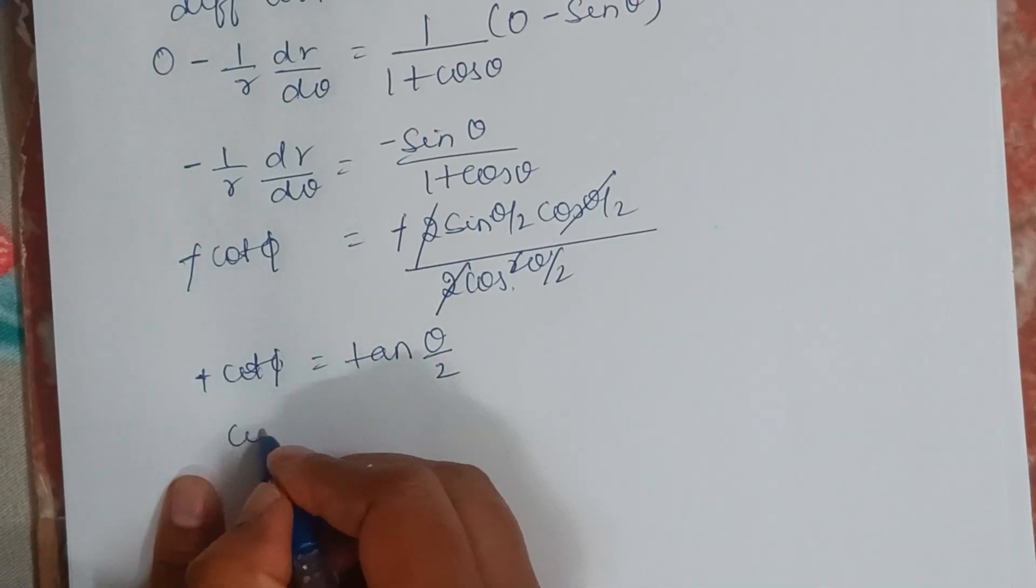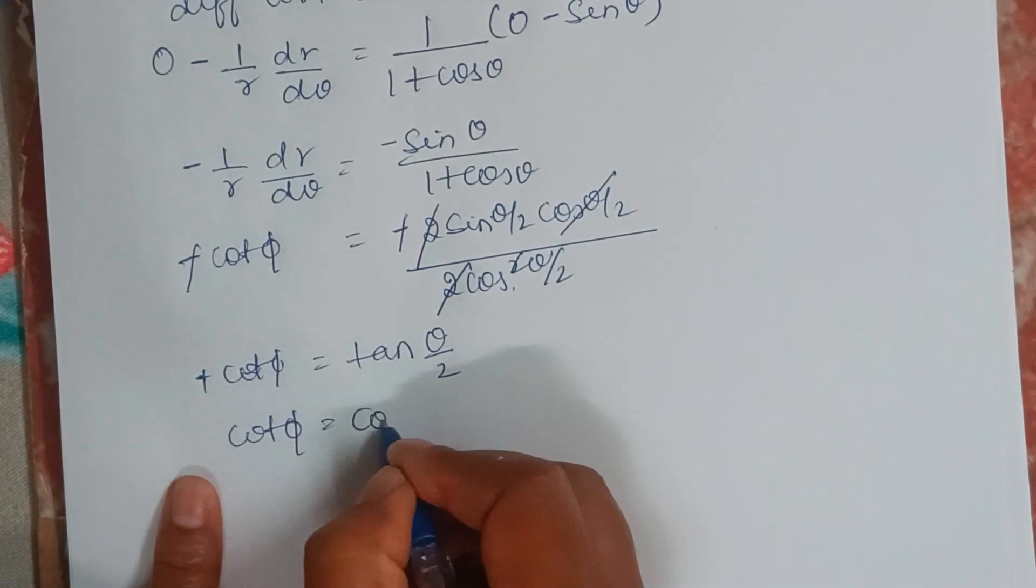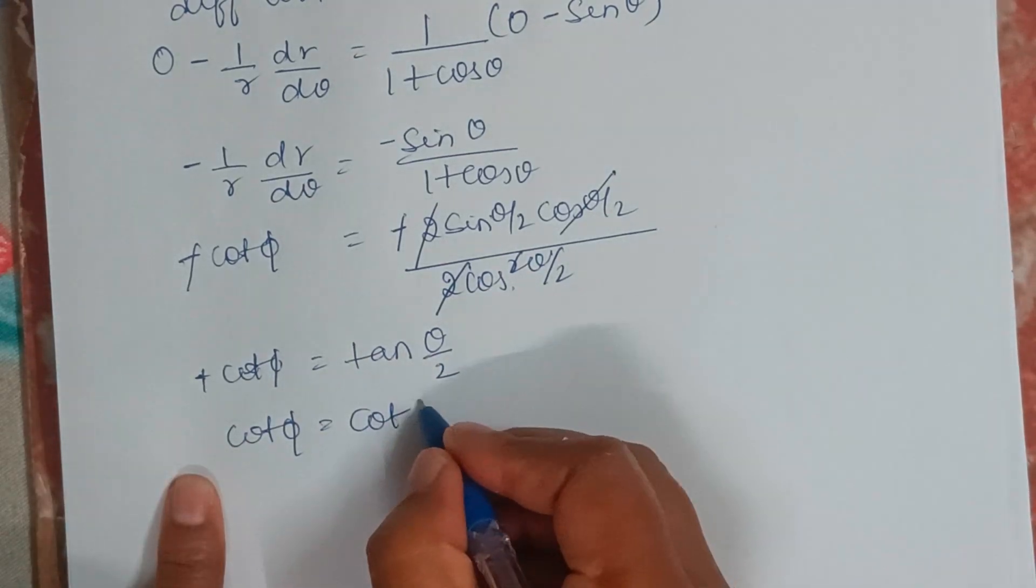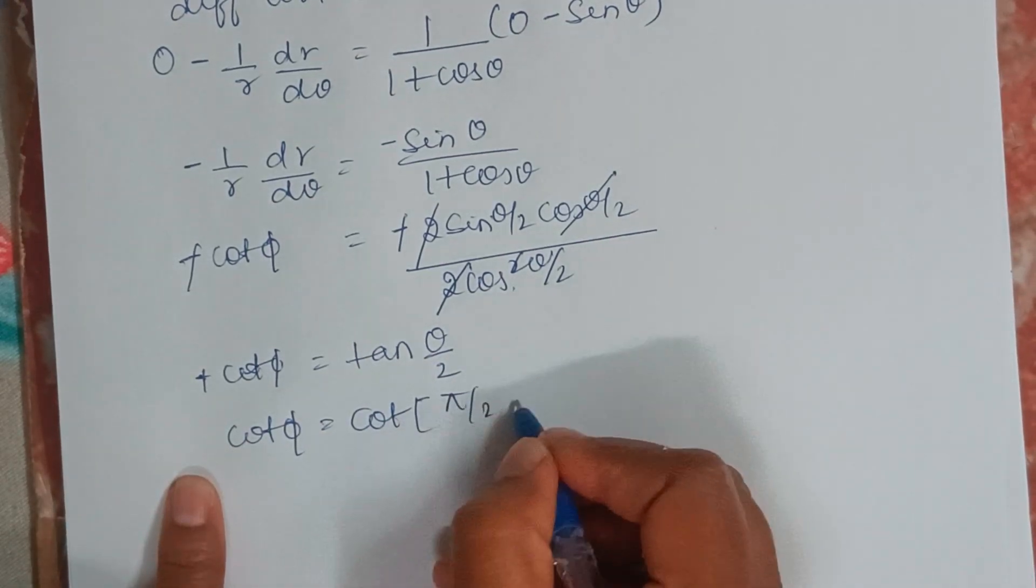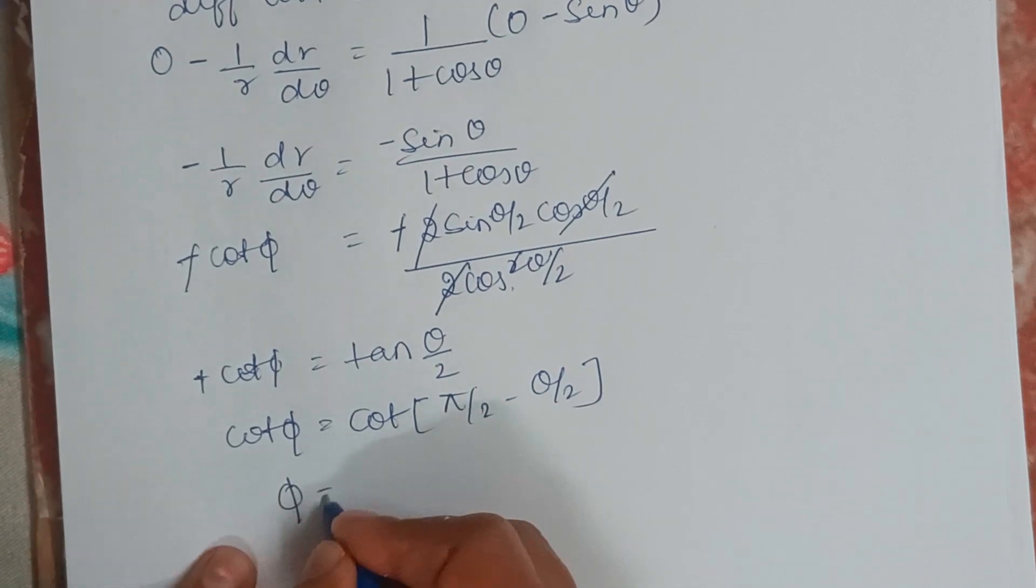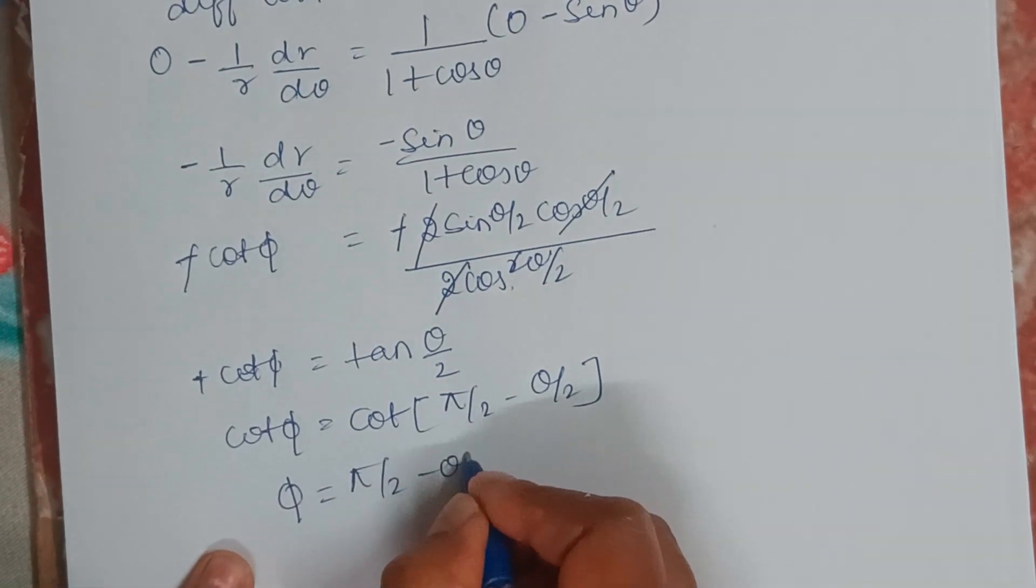Now, I will write it in terms of cot. So it will become, it is positive, so first quadrant, so it will be 90 minus theta. So cot pi by 2 minus theta by 2. So phi is nothing but pi by 2 minus theta by 2.